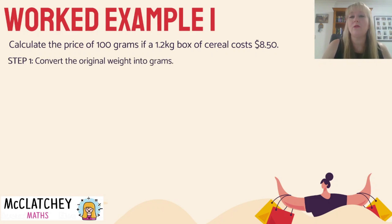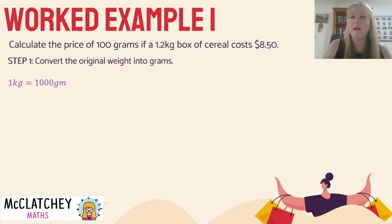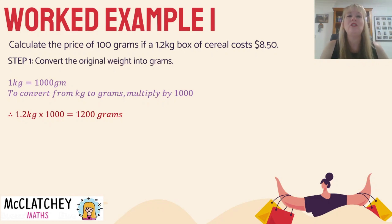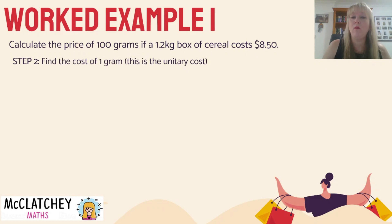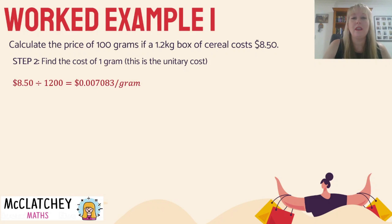Step one: convert the original weight into grams. Since we need to find the price of 100 grams, we first need to turn kilos into grams. We know there are 1,000 grams in one kilogram, so we multiply 1.2 kilos by 1,000, giving us 1,200 grams. Step two: find the cost of one gram — this is our unitary cost. It's always easier to take things back to one gram and then scale up to the amount we need. So we divide $8.50 by 1,200 to get a very small price per gram — not even a cent.